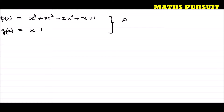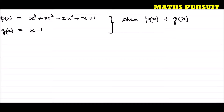When p(x) is divided by g(x), we need to find out the remainder. This is what the question has asked us to do.